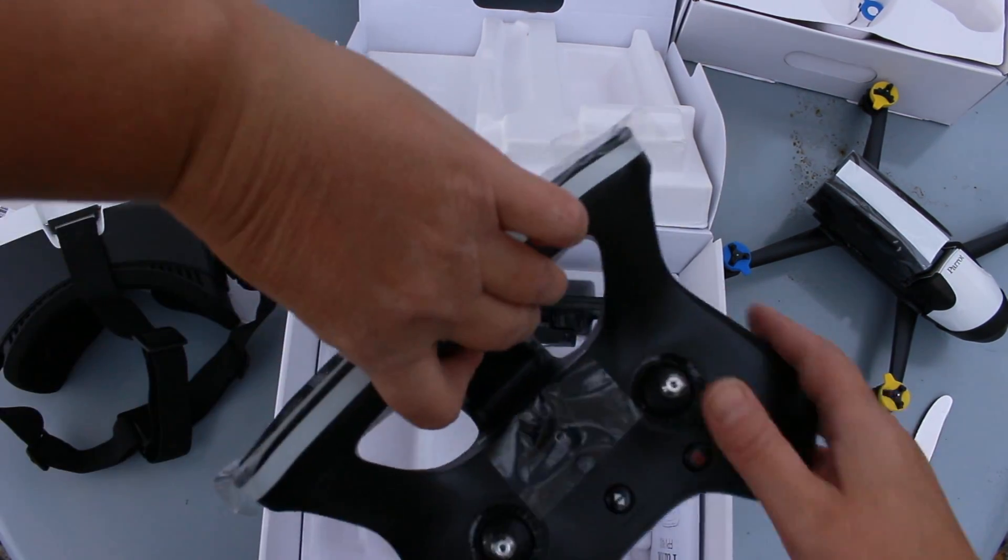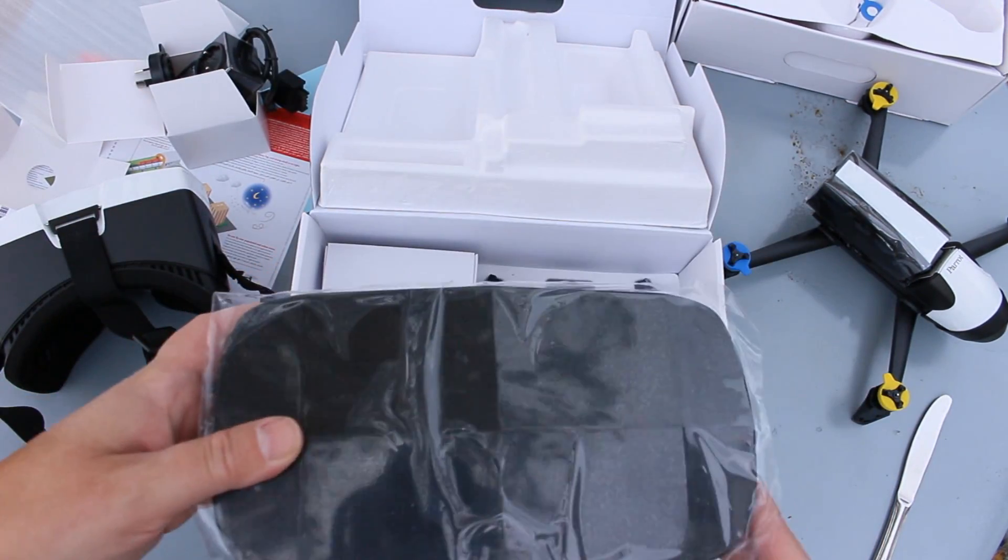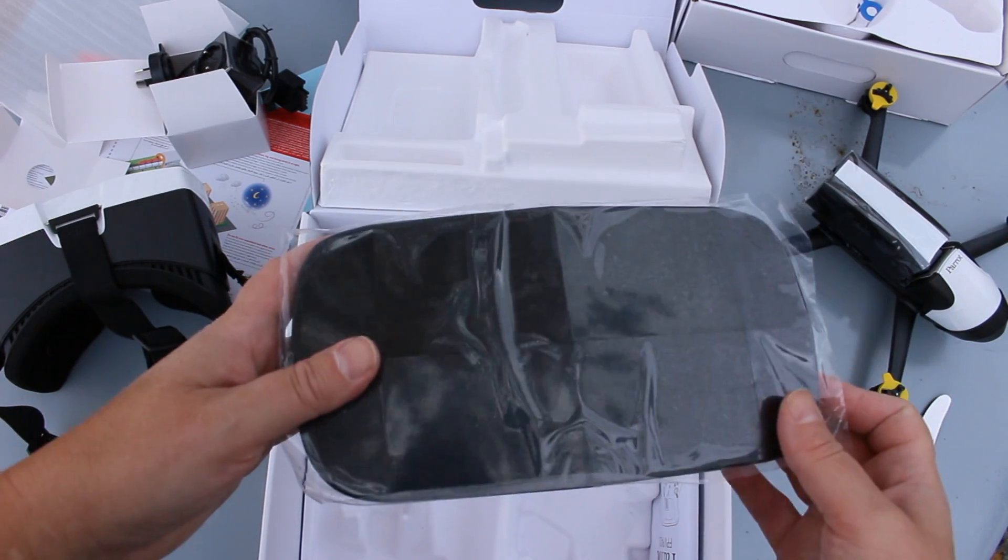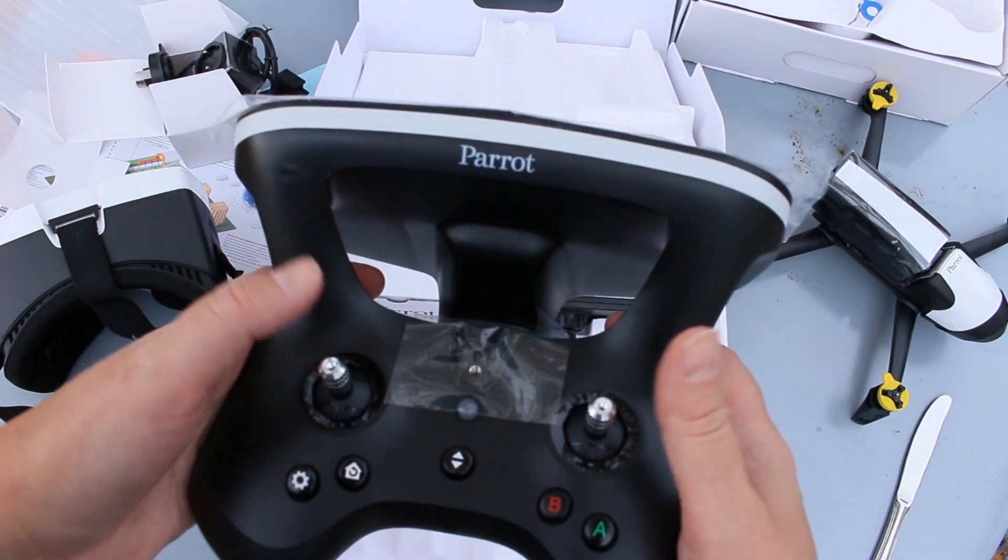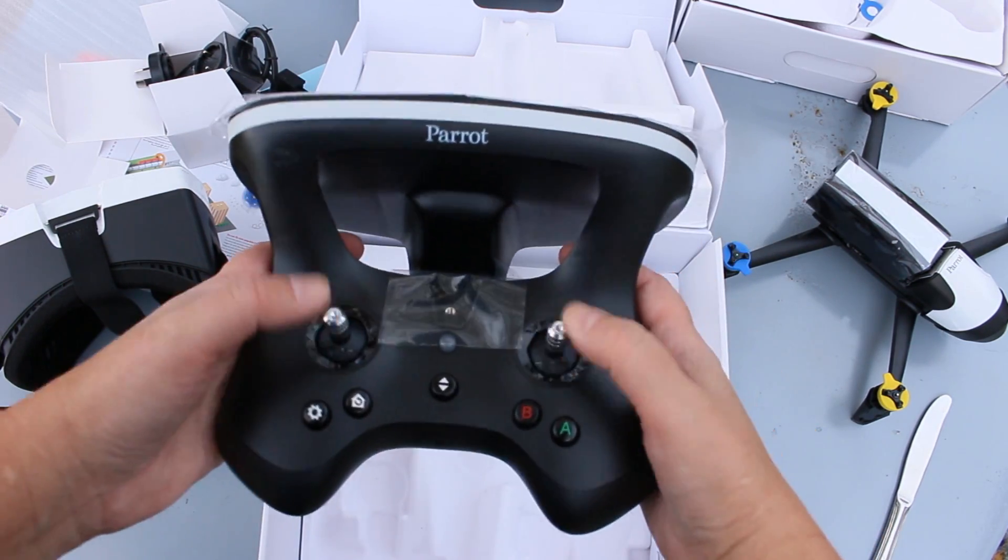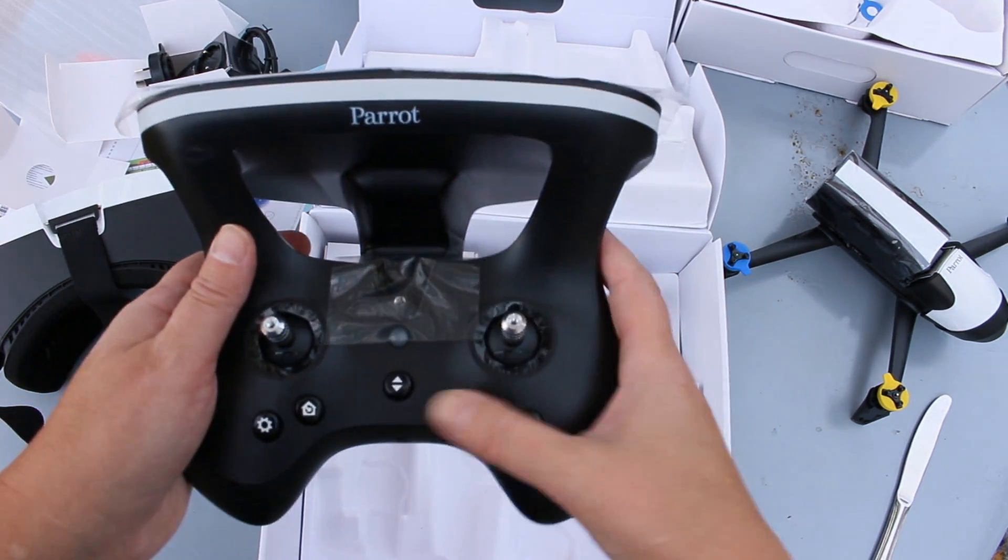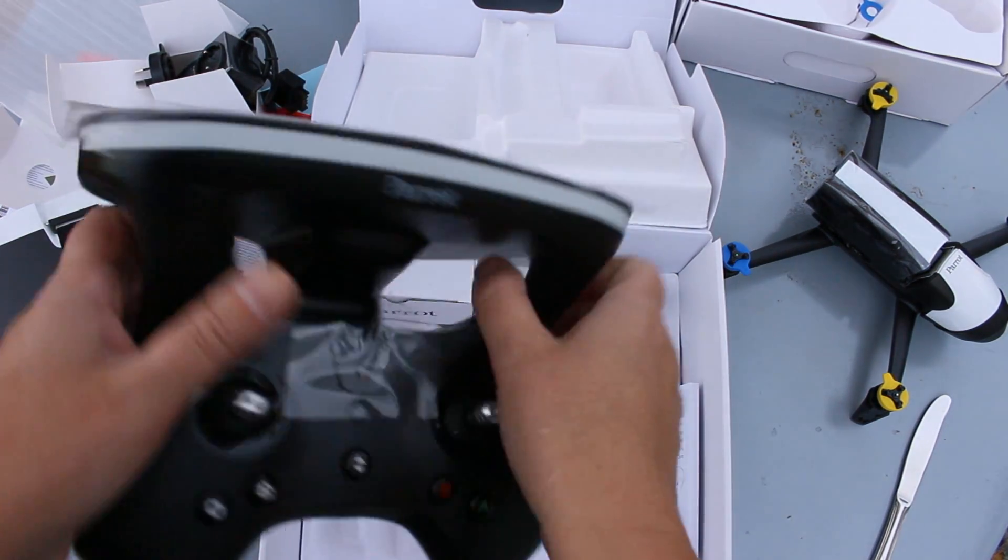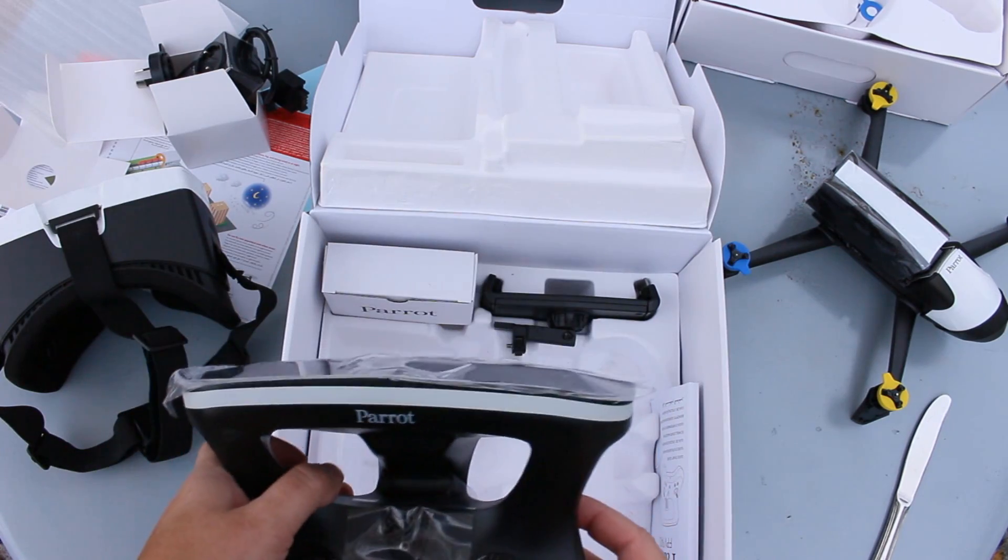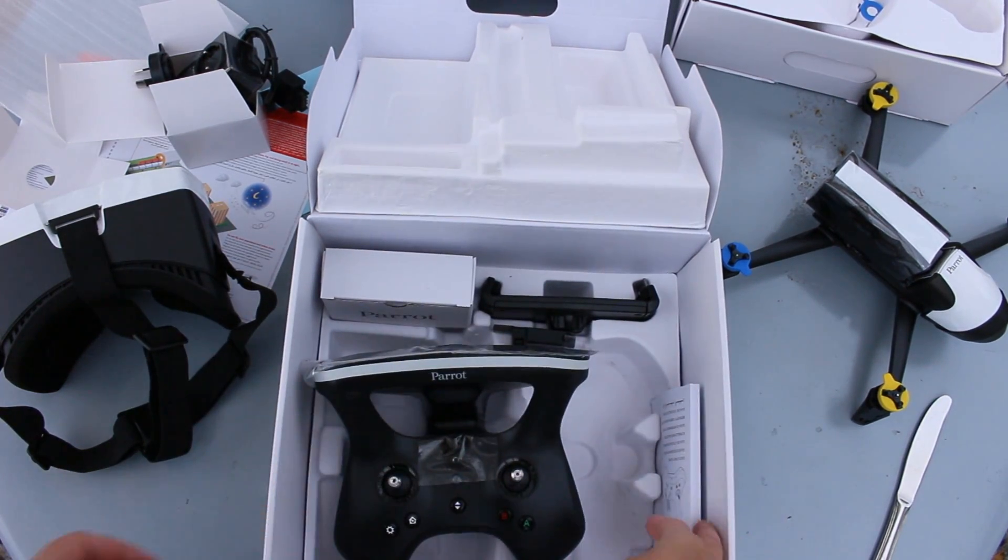And this right here is the sky controller. So nice. Oh, I really like that it's kind of got the Xbox controls almost, right? Joystick. Really cool. Okay. That looks easy enough. There you go. Really excited to try this out. What else do we have in here?